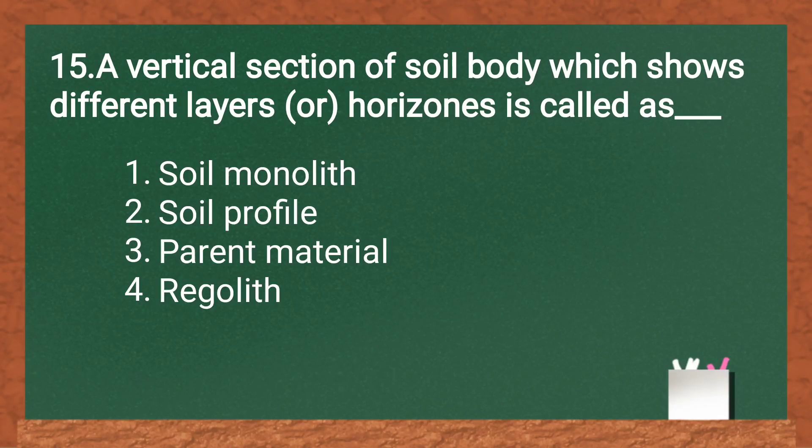A vertical section of the soil body which shows different layers or horizons is called as soil monolith, soil profile, parent material, or regolith. The answer is soil profile.